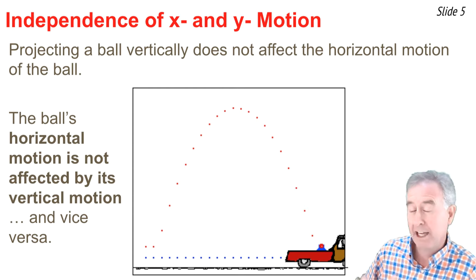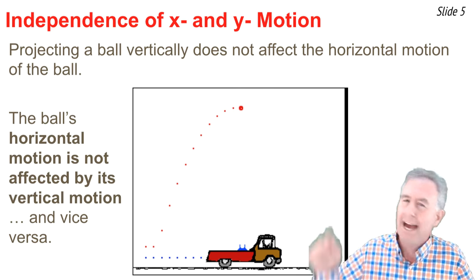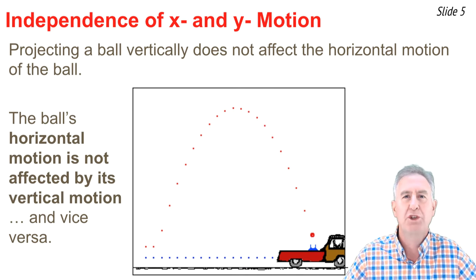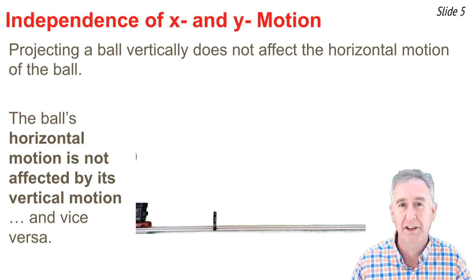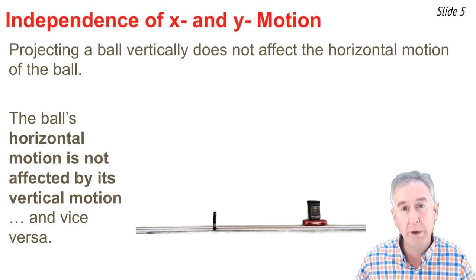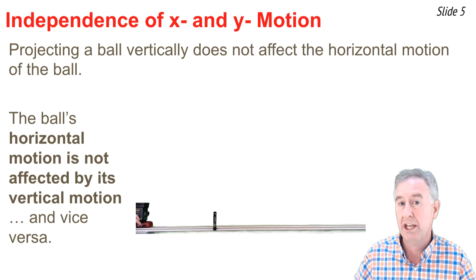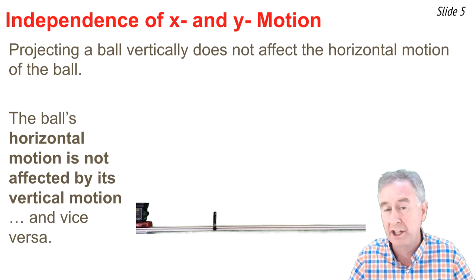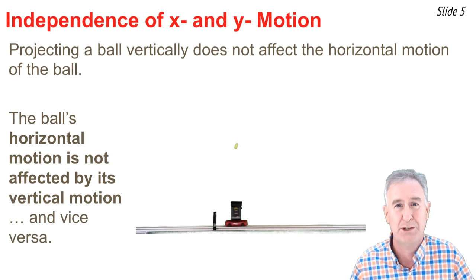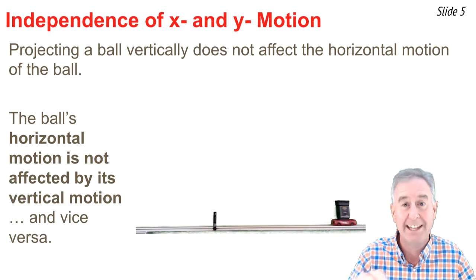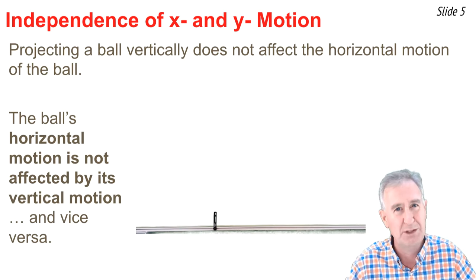When students see an animation like this, many say, 'That would never happen — that's just rigged.' Well, here's the real thing. A lab cart equipped with a launcher launches a ball upwards. As the ball moves upwards and horizontally, it remains above the launcher at all times and lands back in the cup. You've got to believe in physics when you see that.